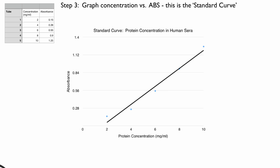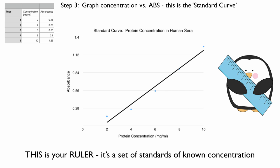This is the standard curve. This is your ruler. This is the set of standards of known concentration. In other words, you know what the concentration in each tube is and you know what the absorbance is. That's your ruler.